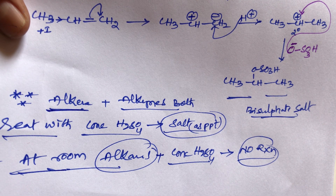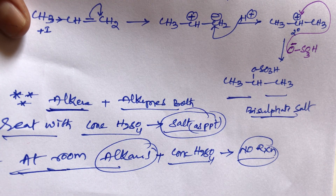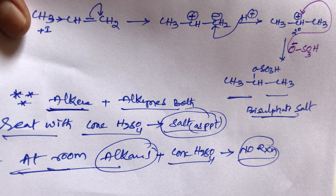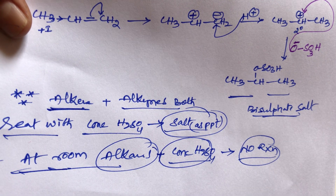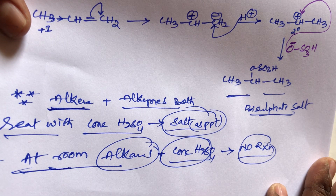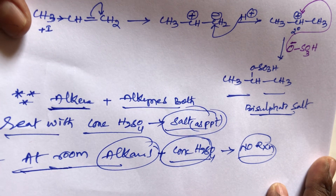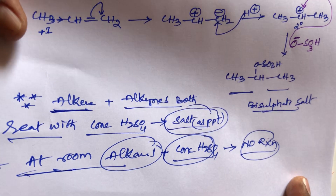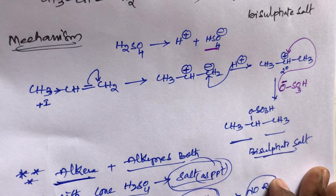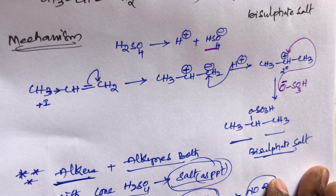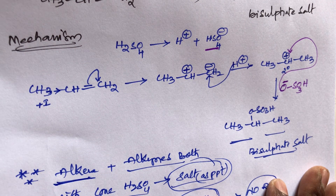To summarize: unsaturated hydrocarbons — alkenes and alkynes — both react with concentrated H₂SO₄ to form a salt precipitate, but alkanes do not react. This reaction is generally used in practical organic chemistry. The simple trick is: alkenes react with concentrated H₂SO₄ to form a salt precipitate — a very important concept.